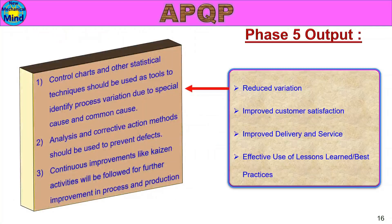First, Reduced Variation. Control Charts and other statistical techniques should be used as tools to identify process variation due to special cause and common cause. Analysis and Corrective Action methods should be used to prevent defects. Continuous improvement activities will be followed for further improvement in process and production. In mass production, Control Charts and SPC study will identify any special or common cause variation.